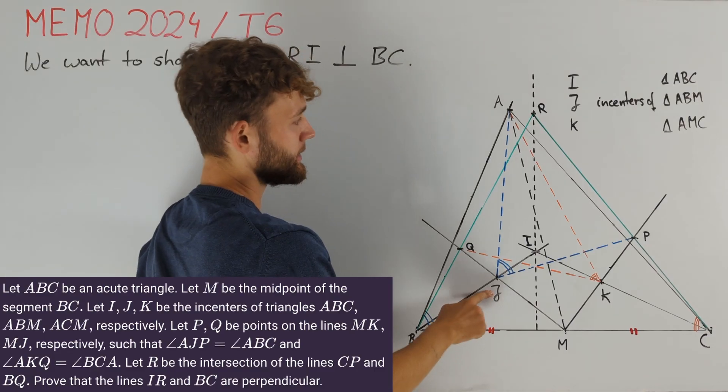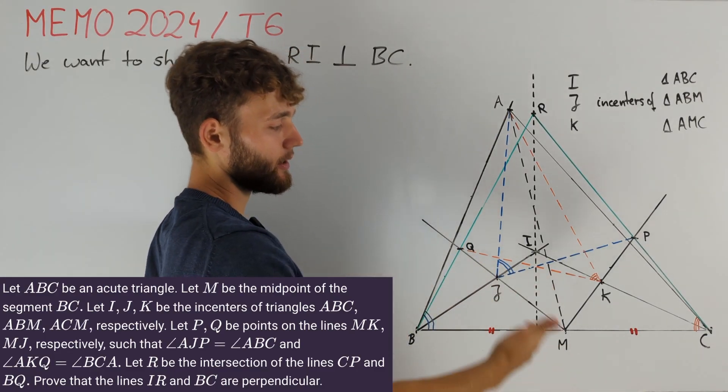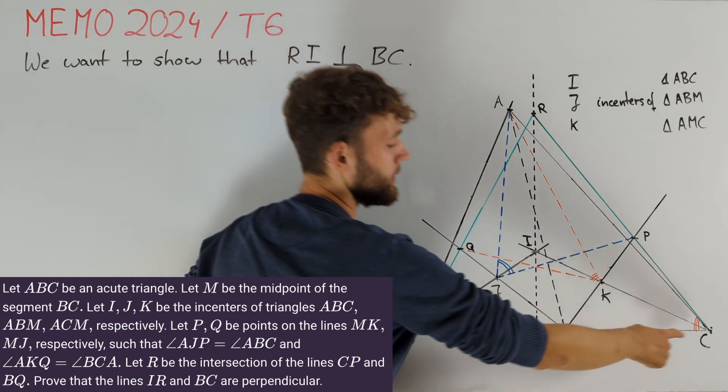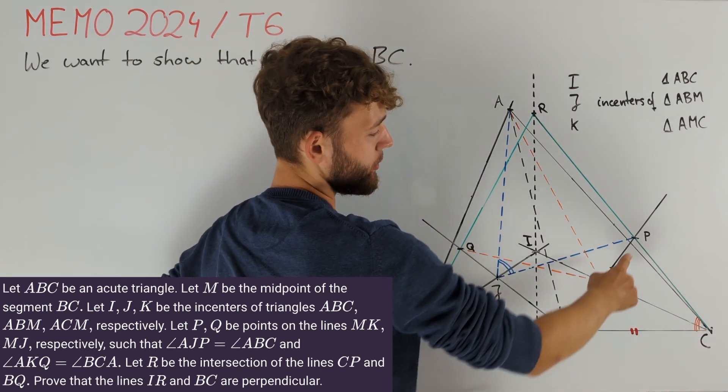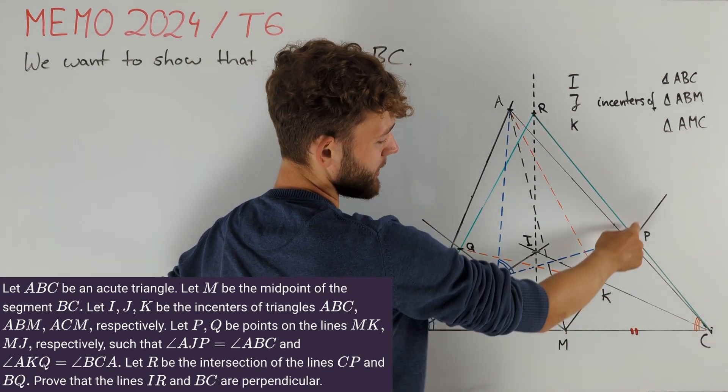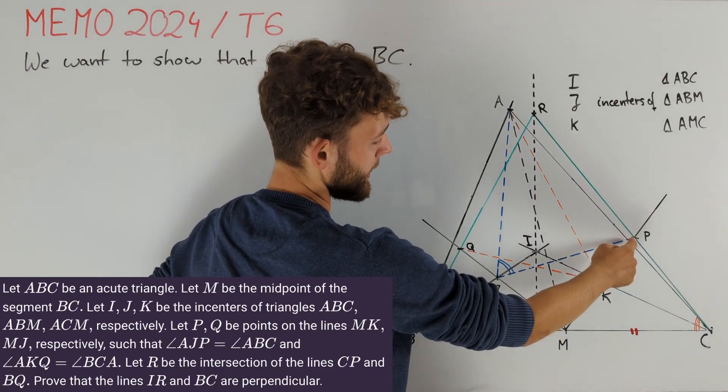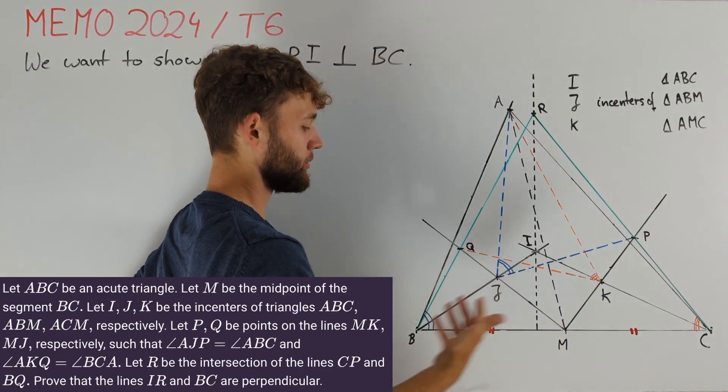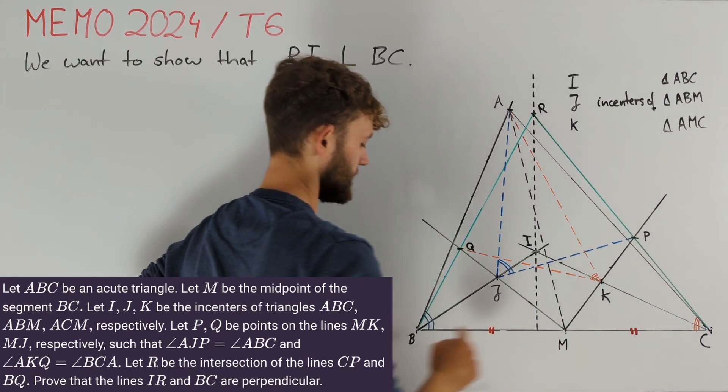J is the incenter of triangle ABM and K the incenter of triangle AMC. We now take the point P on line MK such that the angle PJA is equal to the triangle interior angle CBA.